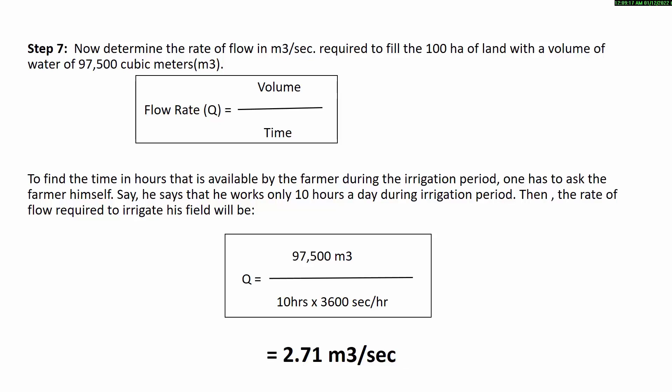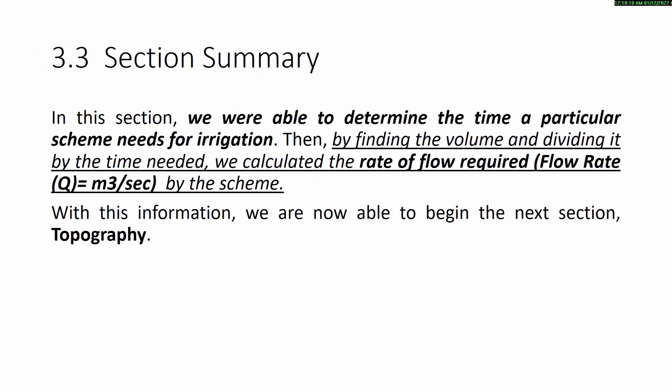Based on this, we then consider the cross-section dimensions through which we can convey this amount of water per second, and proceed with further steps in canal design. In this section, we were able to determine the time a particular scheme needs for irrigation, then by finding the volume and dividing it by the time needed, we calculated the rate of flow required by the scheme. With this information, we are now able to begin the next section: topography. Thank you.